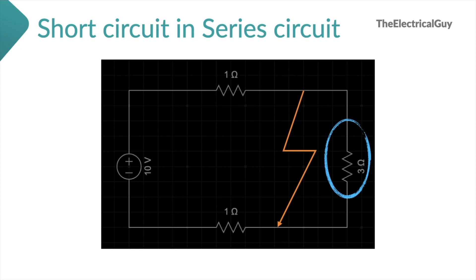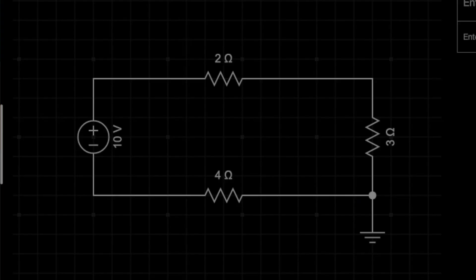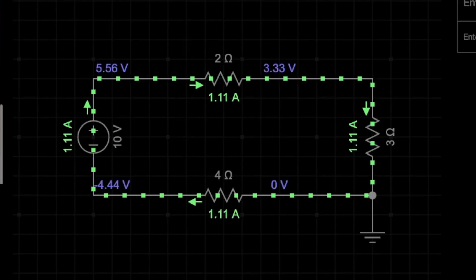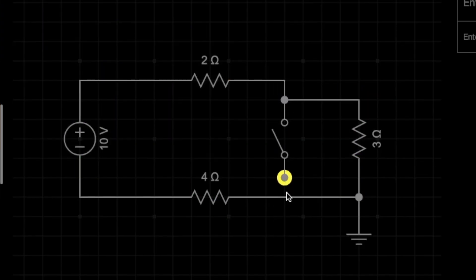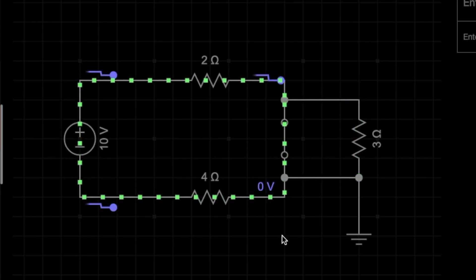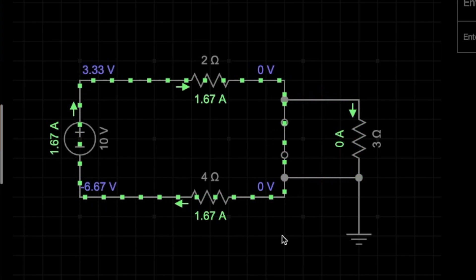Since the current has increased, power dissipation across R1 and R3 will also increase, causing the temperature of those components to rise and potentially burn. This type of short, where only some part of the circuit is eliminated and resistance is not completely zero, is called a partial short. For example, in a series circuit with normal current of 1.11 amperes, adding a very low resistance path as a short causes the circuit current to rise to 1.67 amperes and the 3 ohms resistance is eliminated — this is the partial short.